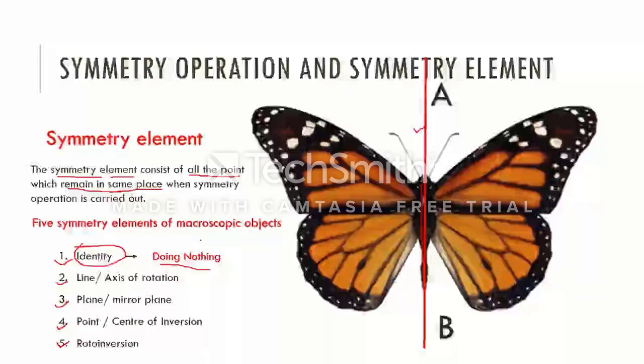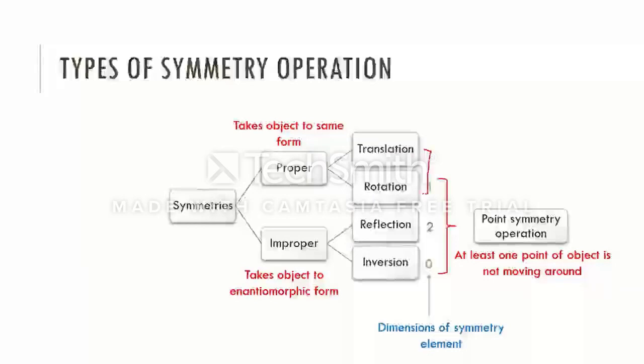Translation and rotation are proper symmetry operations. Proper symmetry operations are the operations which are actually carried out, therefore termed as proper symmetry operations. A proper action takes the object to the same form as it was before. On the other hand, reflection and inversion are improper actions. Improper actions can only be imagined and not actually performed on the object. These actions take the object to their enantiomorphic form.